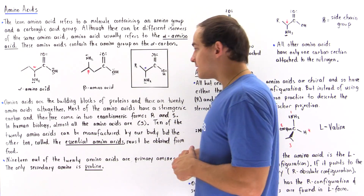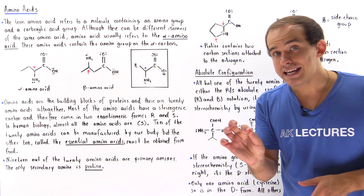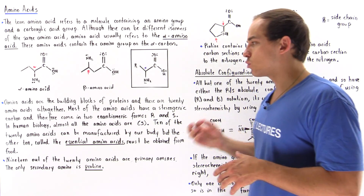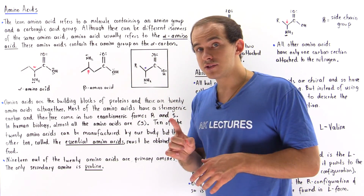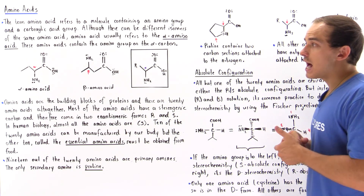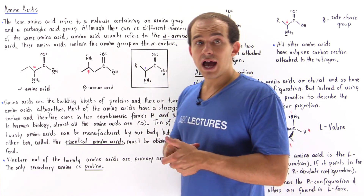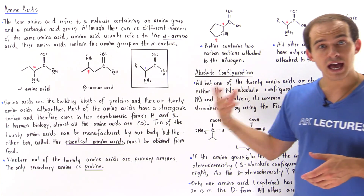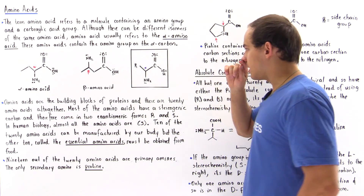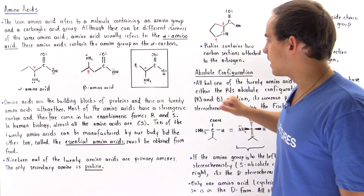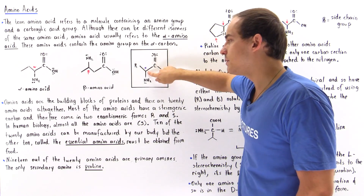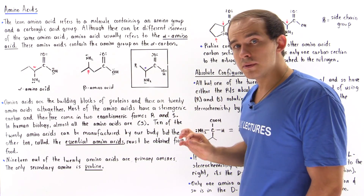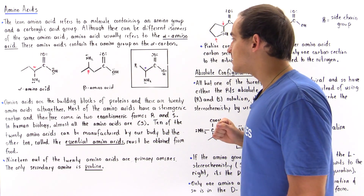Most amino acids — in fact 19 of the 20 — contain a stereogenic carbon, a chiral carbon. That means all 19 of those amino acids contain two different enantiomeric forms: the R and the S enantiomers. Let's take a look at the following diagram — this is the central carbon of the alpha amino acid, and this is the stereogenic carbon present in 19 of the 20 amino acids.